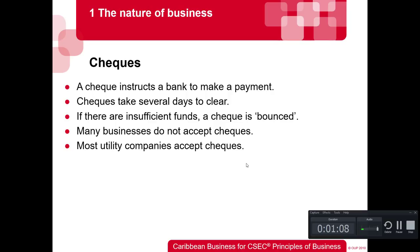If there are insufficient funds, a check is bounced — meaning you do not pay the people you owe. That's a bad thing because you can incur a penalty when you write a check knowing that your checking account does not have the required amount. If there are insufficient funds, the check bounces — that's why it's called a bounce.